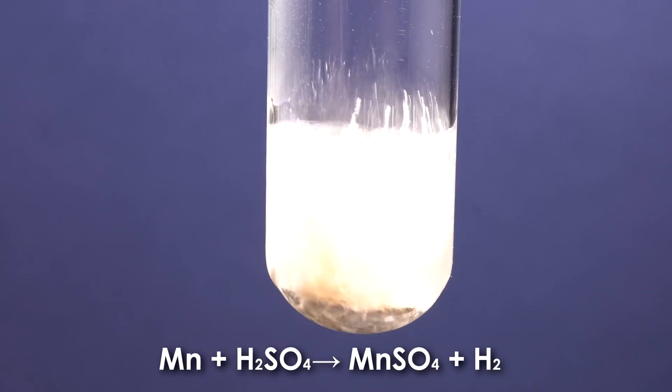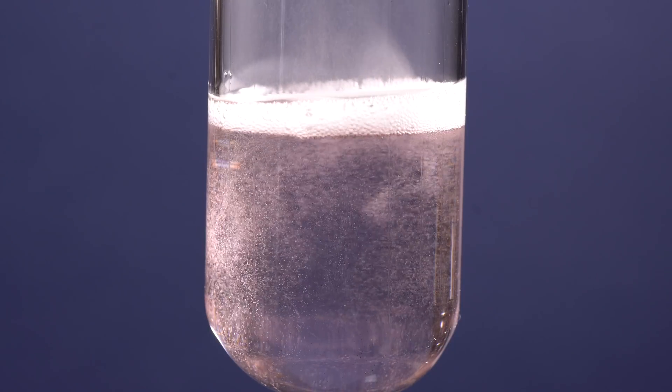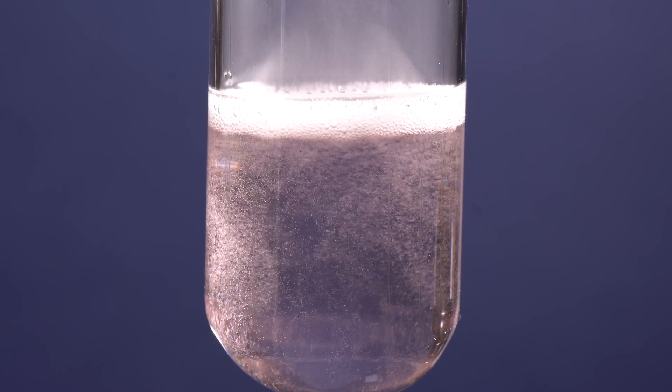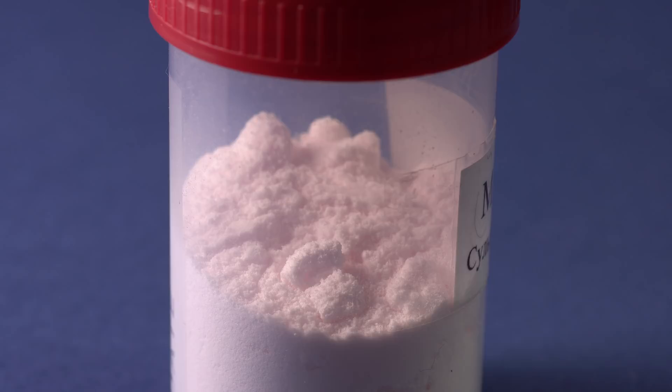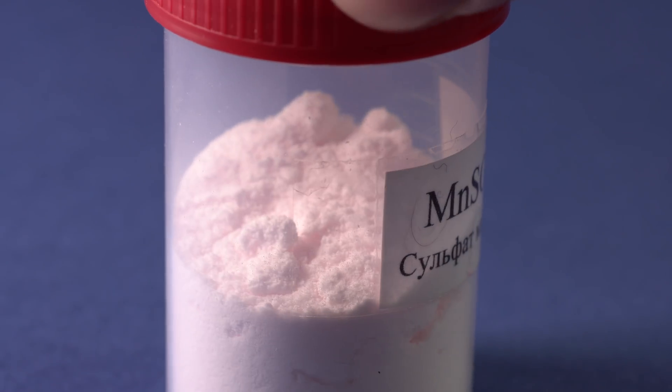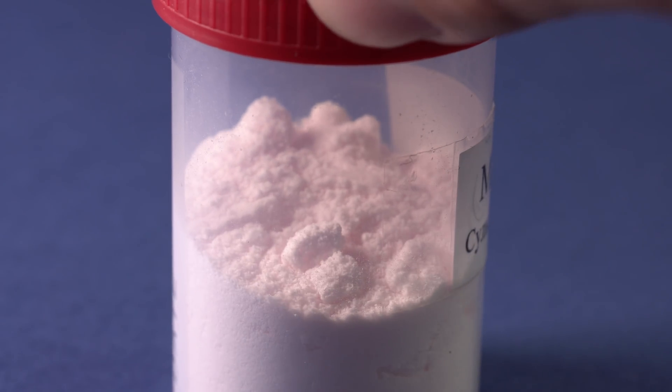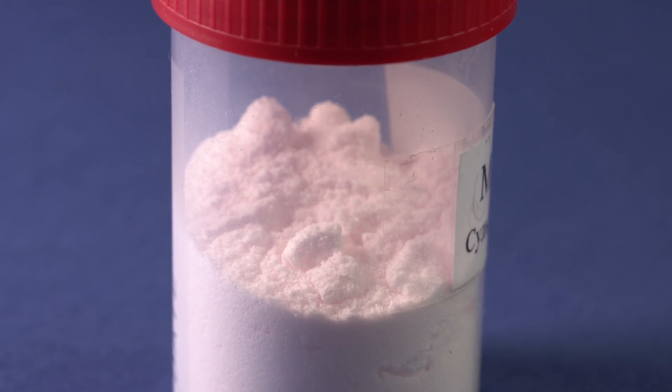The metal manganese reacts well with acid. With sulfuric acid it forms hydrogen and manganese sulfate, which has a light pink color. In its solid state, manganese sulfate is a white powder with a pinkish shade. When there is a shortage of manganese compounds in a human body, it is prescribed as a medicine.